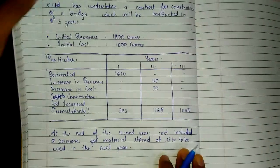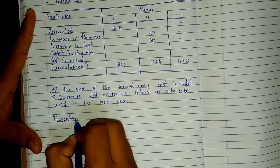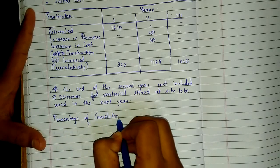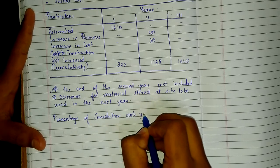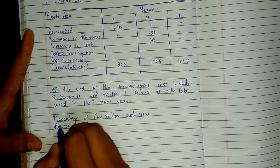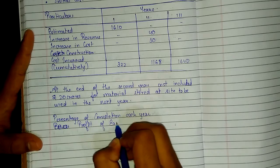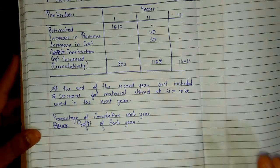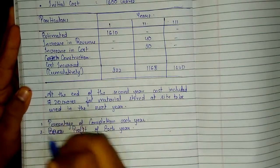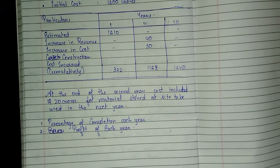In this sum, what we need to find is: first, percentage of completion each year, and second, profit of each year. Please write these two requirements down as well.